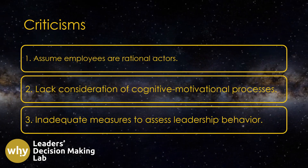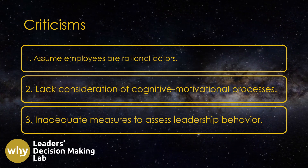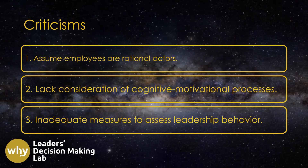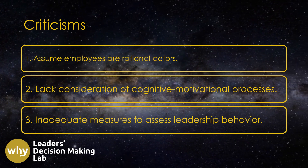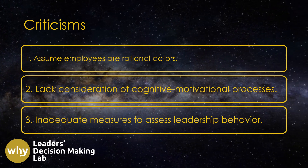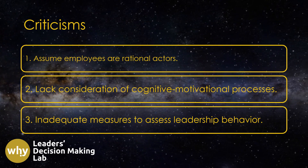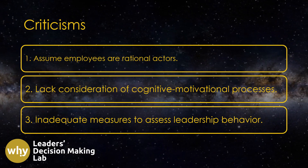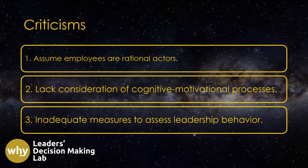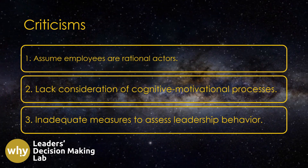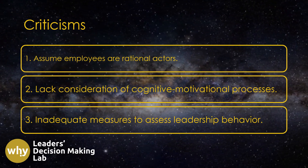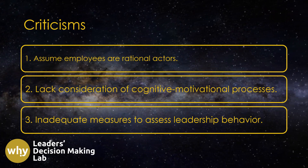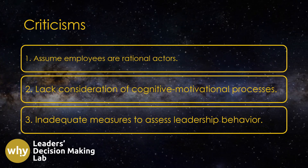The third criticism of the path-goal theory is the use of inadequate measures to assess leadership behavior. Scholars have pointed out that the use of self-report measures in many studies is a potential source of bias that could influence the accuracy of the results. Furthermore, some studies have used oversimplified measures of leadership behavior that fail to capture the nuances of the theory.